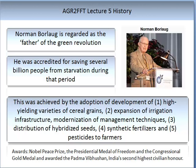He was accredited for saving several billion people from starvation during this period. This was achieved by selecting varieties of cereal grains that produced high yields, along with an expansion of irrigation infrastructure, modernisation of management techniques, a distribution of hybridised seeds, as well as the production of new synthetic fertilisers and new pesticides to farmers.